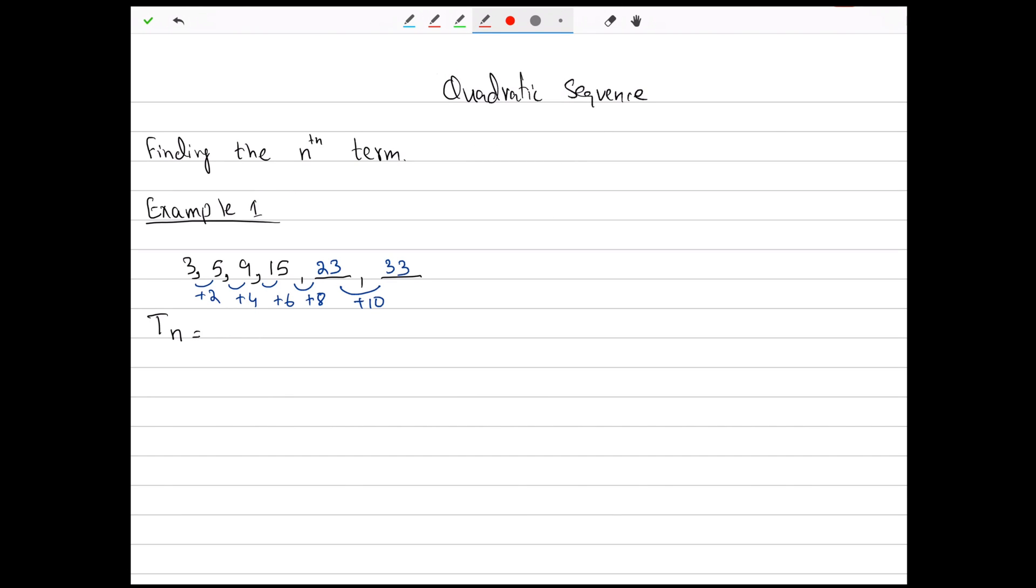Now, there is a pattern in our differences. The difference of the difference is a common number, and what is it? It is 2. Now remember, what do we call this? It is d2, or simply difference of the difference. And the first difference we have is d1, the first difference.